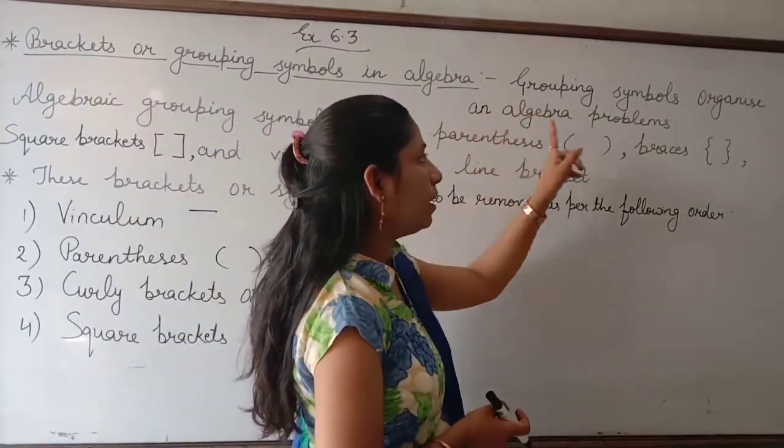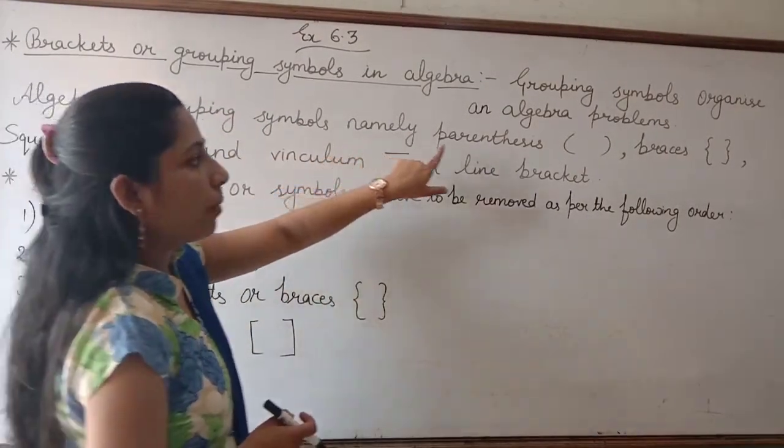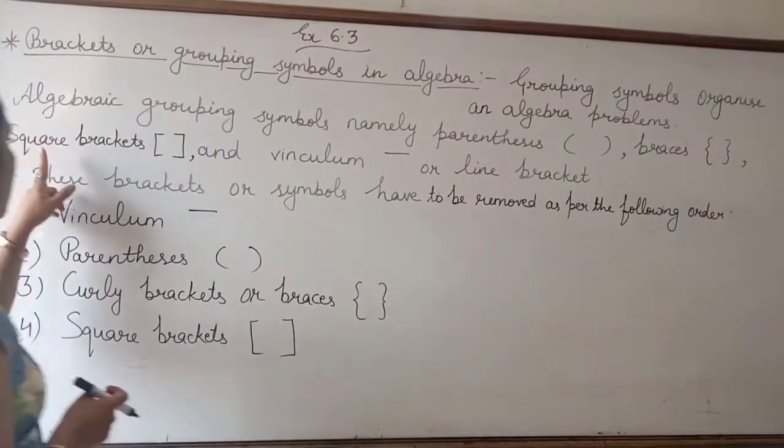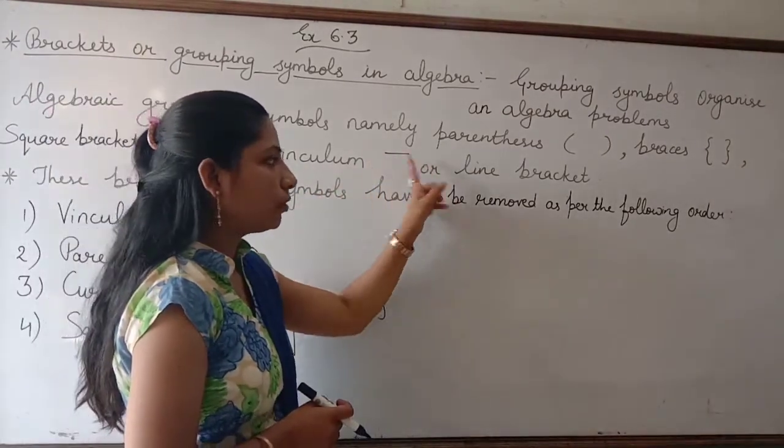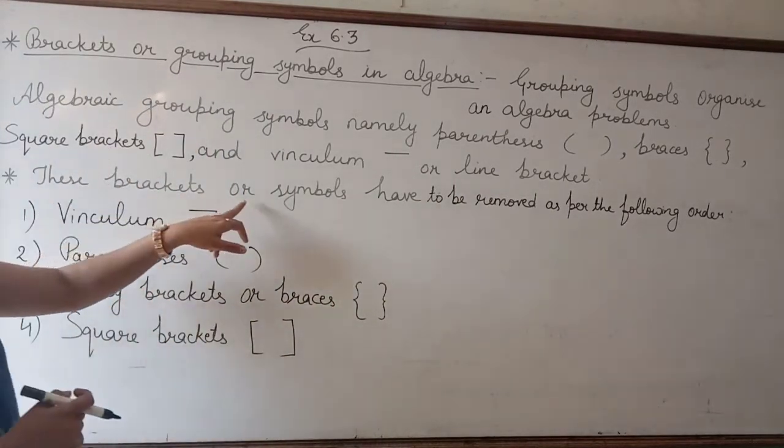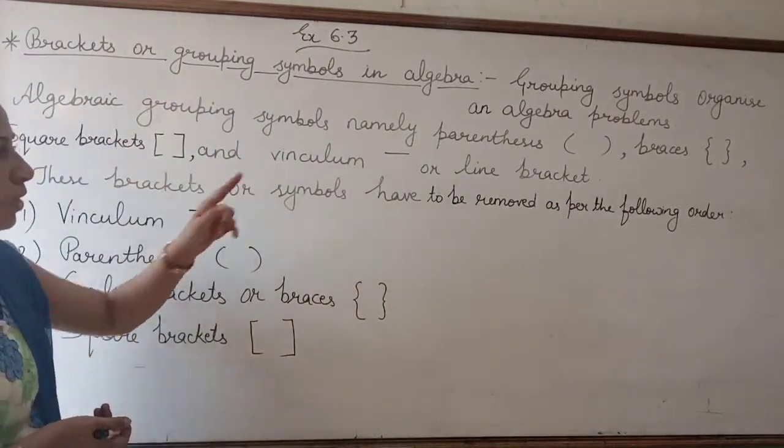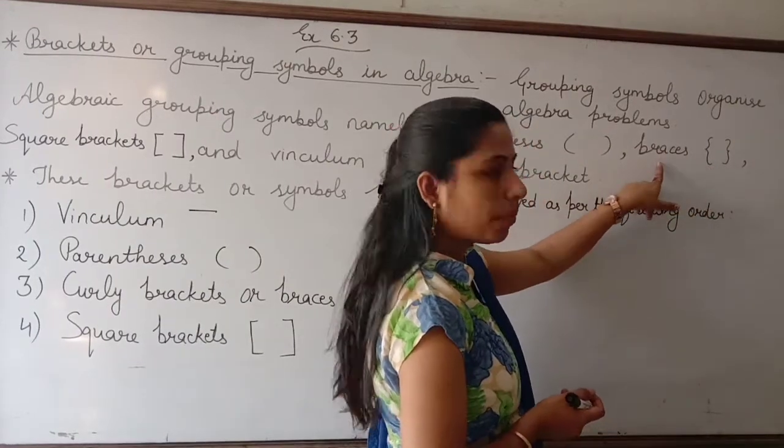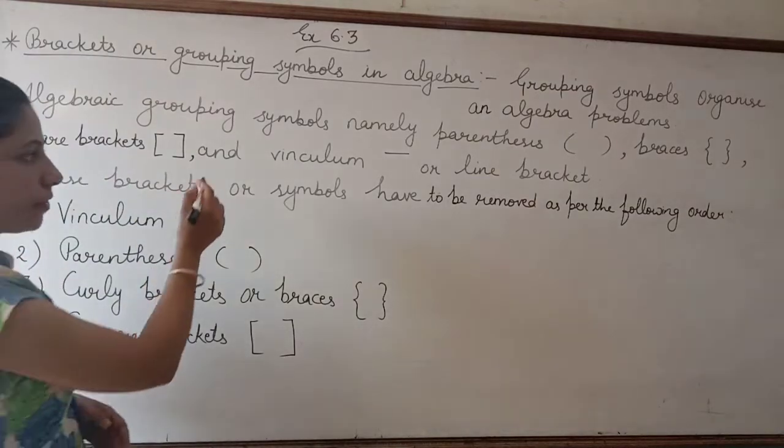Exercise 6.3 is related to brackets or grouping symbols in algebra. Grouping symbols organize algebra problems. Algebra has brackets - it means small brackets or parentheses, braces or curly brackets, then square brackets, and vinculum. This kind of line is used to define line brackets.